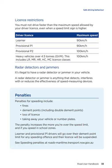Radar detectors and jammers. It's illegal to have a radar detector or jammer in your vehicle. A radar detector or jammer is anything that detects, interferes with, or reduces the effectiveness of speed measuring devices. Penalties for speeding include fines, demerit points including double demerit points, loss of licence, and taking away your vehicle or number plates. The penalty increases the more you're over the speed limit, and if you speed in school zones. Learner and provisional P1 drivers will go over their demerit point limit for any speeding offence, and their licence will be suspended. See speeding penalties at roads-maritime.transport.nsw.gov.au.